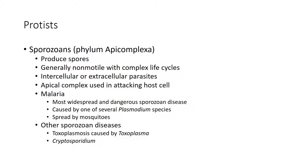Sporozoans produce spores. Spores are asexual reproductive or resting cells capable of developing into a new organism without fusing with another cell — they're not like gametes such as sperm and egg. They tend to be non-motile and have complex life cycles. All sporozoans are parasites, and they have organelles and enzymes specifically for attacking host cells.